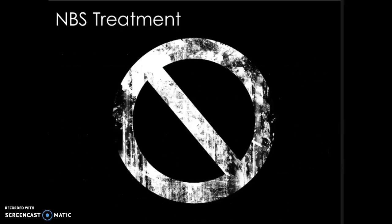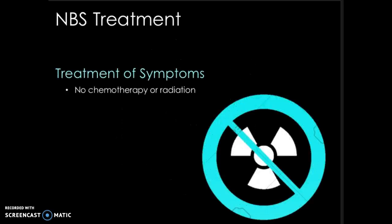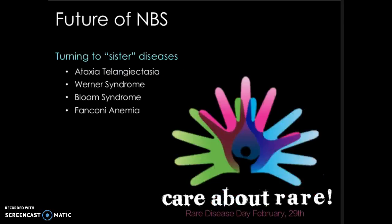No treatment for NBS exists, so we are left to treat the symptoms of the disease for the time being. This becomes quite difficult when cancer is the main cause of death and these patients cannot withstand radiation therapies due to their chromosomal instability and sensitivity. For the future of NBS, we turn to looking at sister diseases — other diseases of DNA repair — in hopes of finding a cure. Ataxia telangiectasia, another extremely rare genetically recessive disorder, shares the most commonalities with NBS and possesses potential crossover for future treatments of both diseases.